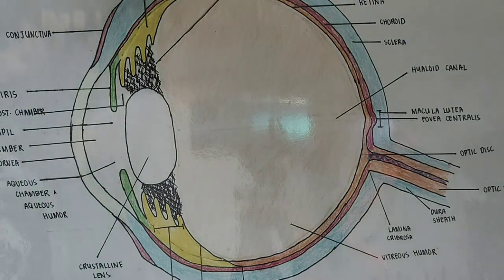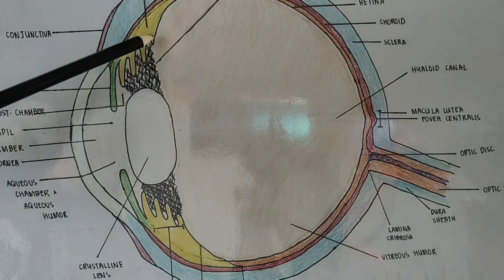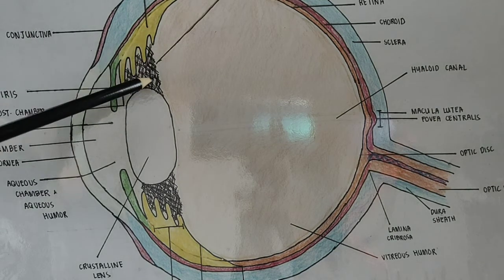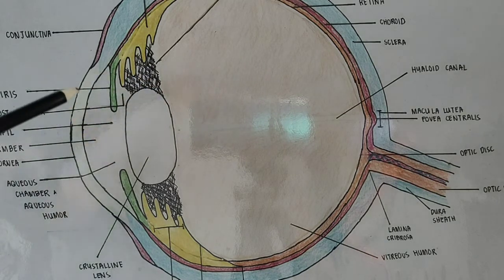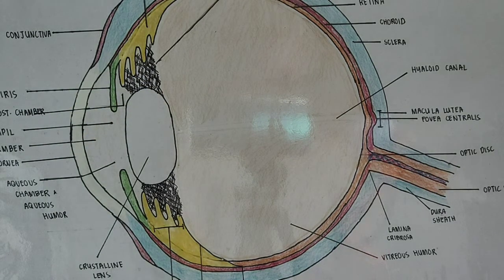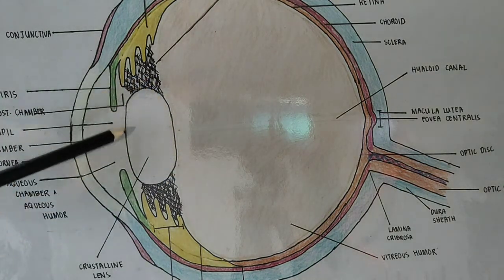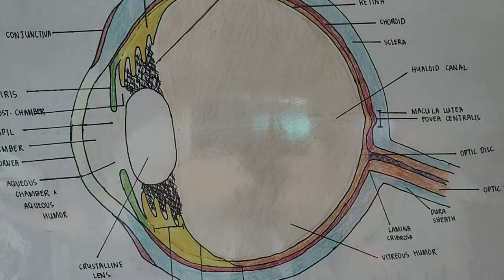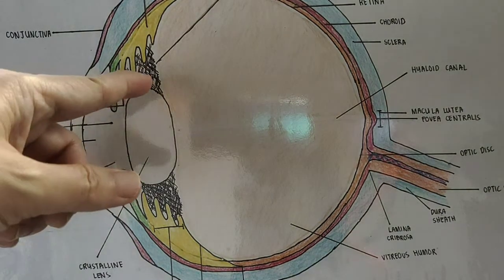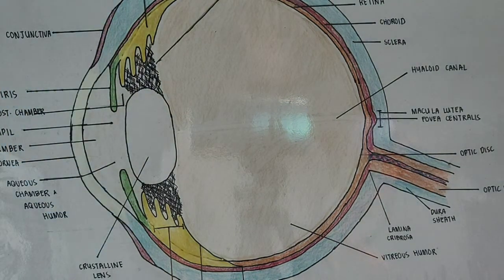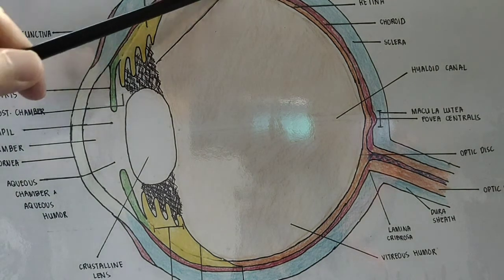This area here we call the ora serrata. In the ciliary body, these projections, these mesh-like structures that are attached to the crystalline lens, we call that the ciliary ligament. Some call it the suspensory ligament because it is the one that is attached to the crystalline lens, which is suspended. The only structure that is trying to control or attach it to the rest of the body is the zonules of Zinn or suspensory ligament, so that the ciliary body can control the accommodation process.